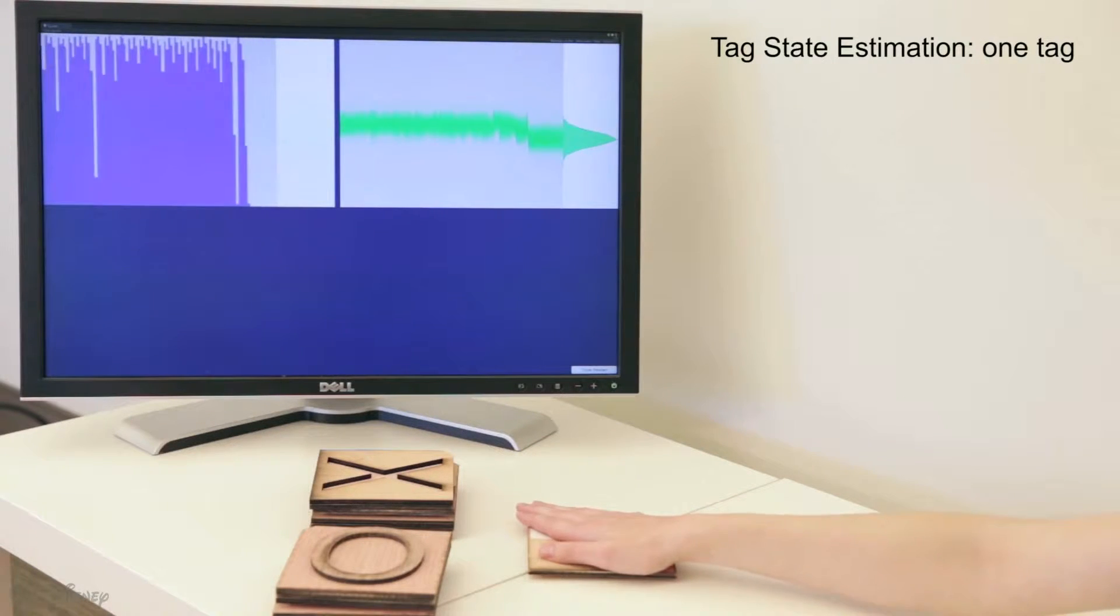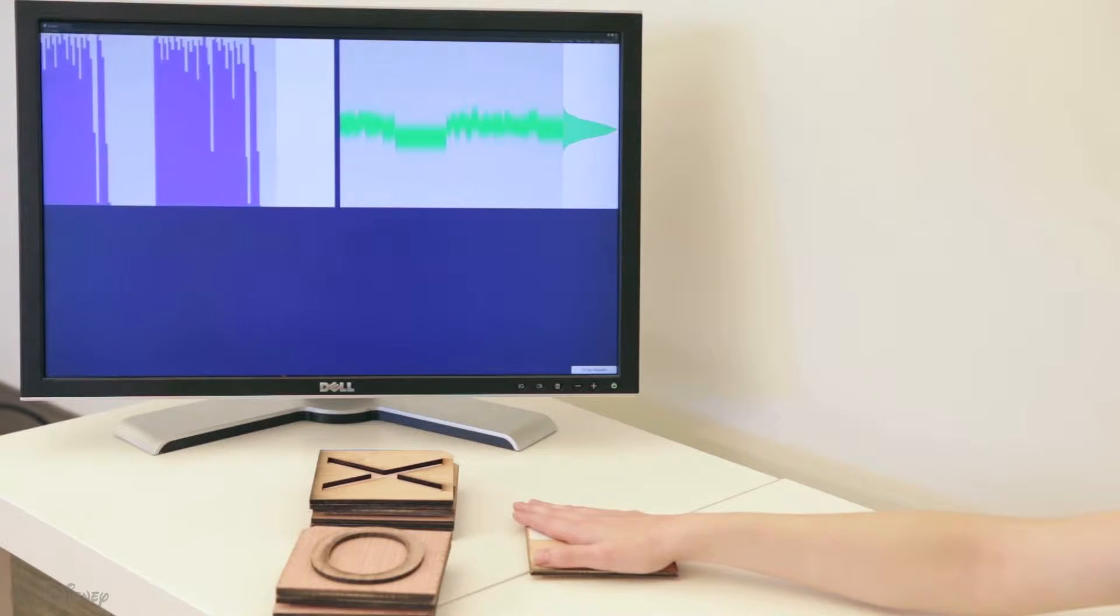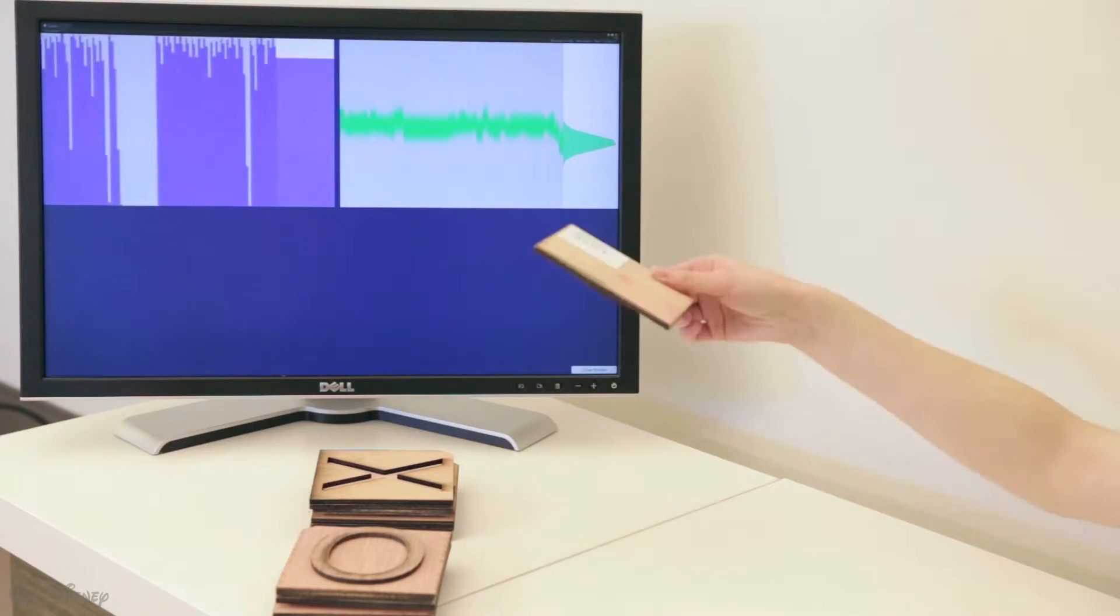At runtime, Rapid estimates the probability of each tag being covered, as well as a distribution over possible speeds.